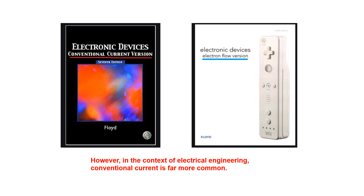The electronic current flow method is generally popular in the physics circle. Physicists prefer to work with the electronic current flow method because that is the correct method. However, in the context of electrical engineering, conventional current is far more common and is what is followed by electrical engineers. I hope this gives you some idea about the difference between the two.